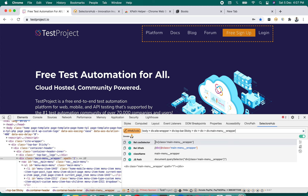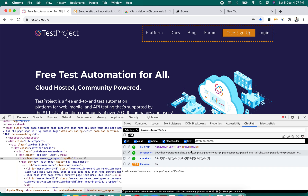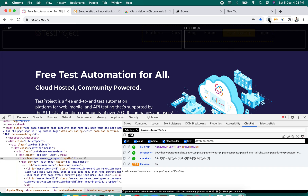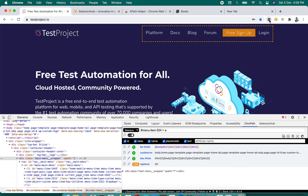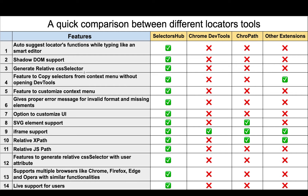Here you can compare: this is the CSS selector from Chrome DevTools, this is from SelectorsHub, and this is from CroPath. XPath Helper doesn't give CSS selectors at all — it's XPath only. SelectorsHub is very helpful for generating relative CSS selectors, which many prefer over XPath for performance and other reasons.